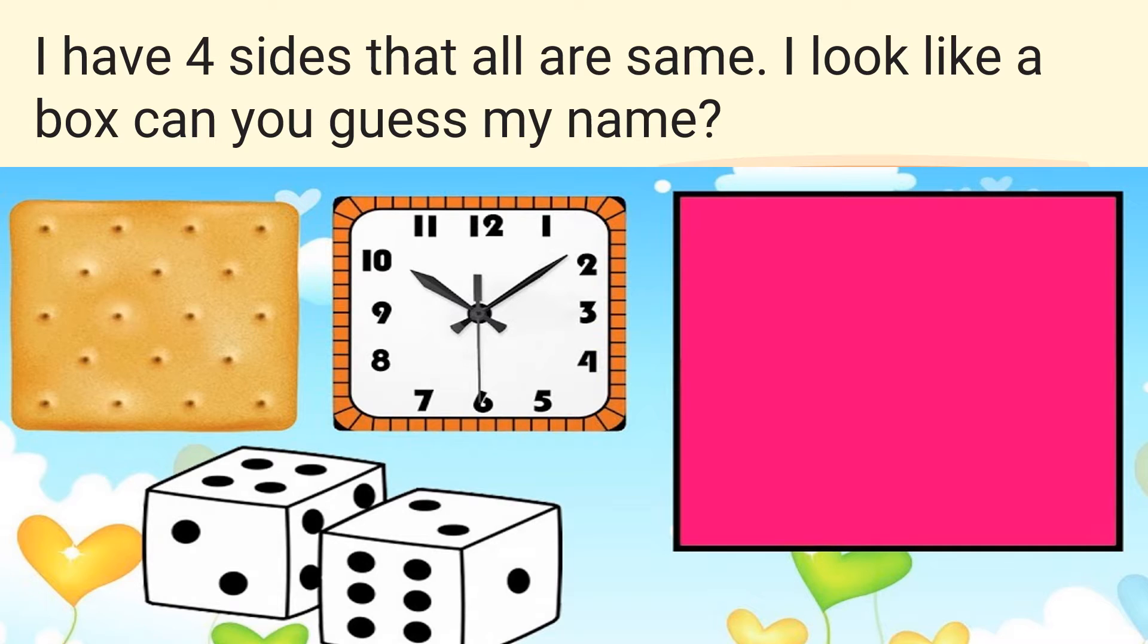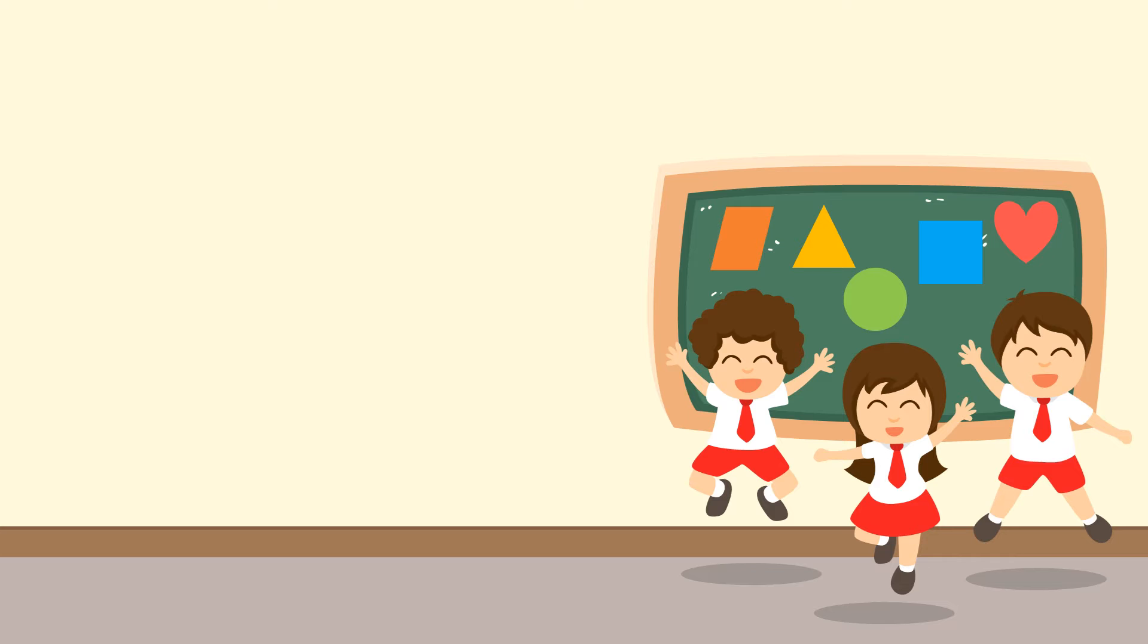I am a shape whose four sides are equal. Very good. Yes. I am a square because a square has four equal sides. Very good.